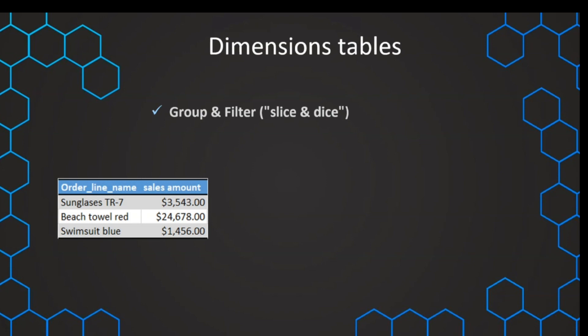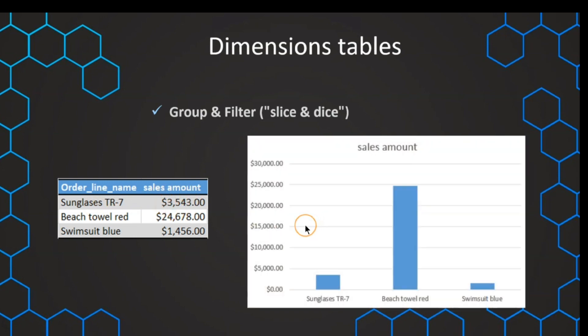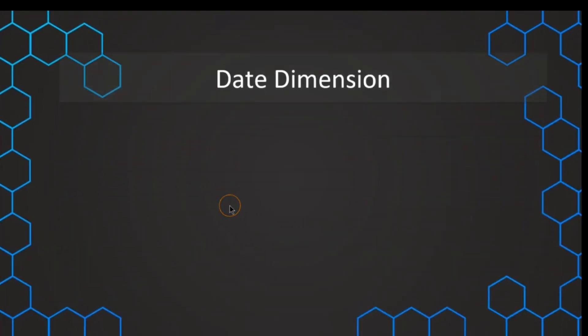The dimension table is used to group and filter data — also called slicing and dicing. We can use attributes like product name to group the data, which is the entry point for data analysis. That's why dimensions are so important. Now we want to dive a little deeper and talk about the most important and most commonly used dimension: the date dimension.